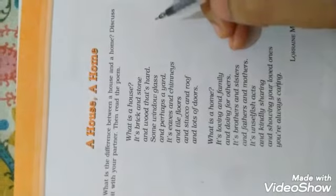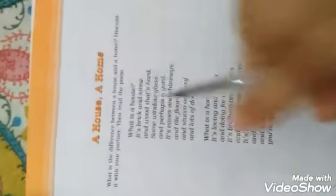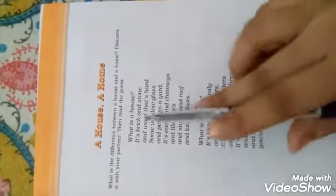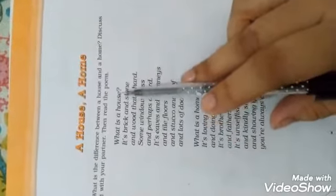Hello students, this is a poem and the poem name is A House, A Home. This is written by Lorraine M. Halli. This is the poem name and poet name. This poet has written this poem House, A Home. So let's see the explanation - what is a house?